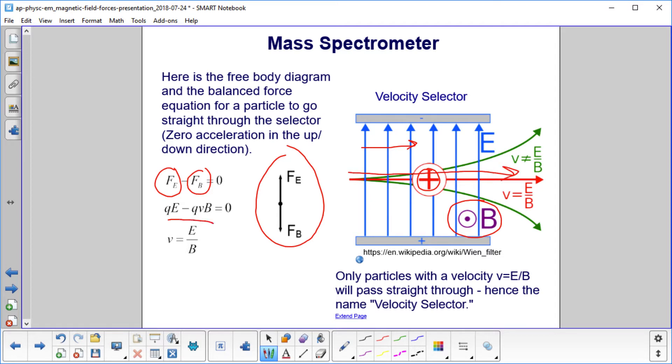So velocity is E over B. Only particles with a velocity that equals the magnitude of the electric field divided by the magnitude of the magnetic field will pass straight through. And since we have these bars and this narrow slit in the middle, we call this a velocity selector because we're selecting particles with the proper velocity.